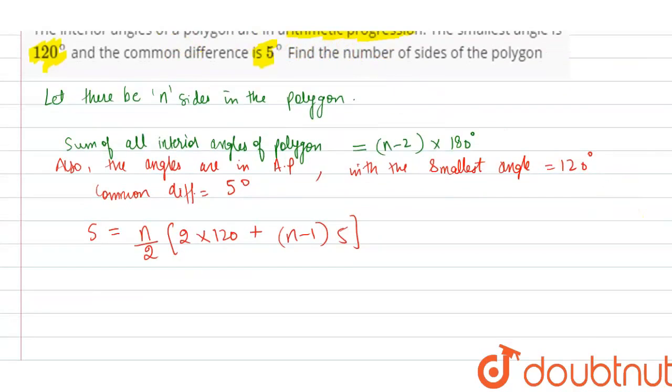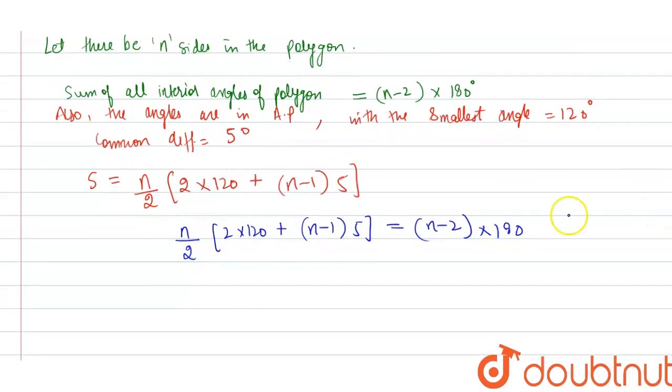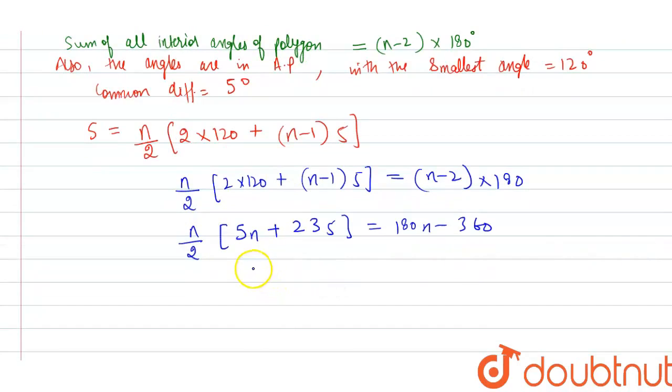We will equate them: n/2[2(120) + (n-1)(5)] = (n-2)(180). After this, we can further simplify. We get n/2[5n + 235] = 180n - 360, which gives 5n² + 235n = 360n - 720.